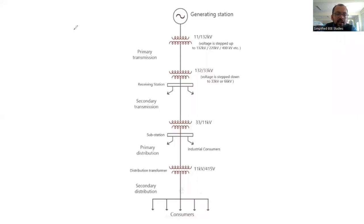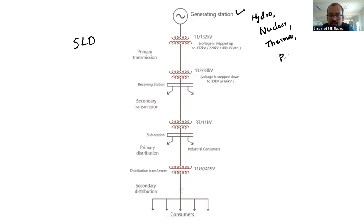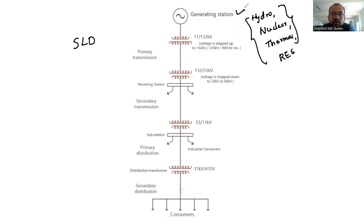Everybody can see the single line diagram of a typical power system on the screen. You already know that the power system is divided into power generation, power transmission, and power distribution. The first block is the power generating station. Examples of generating stations are hydro, nuclear, steam thermal, and renewable energy sources such as solar, wind, and biomass. The combination of these power stations is generally called a power generating station.